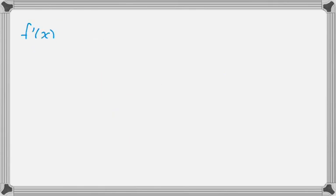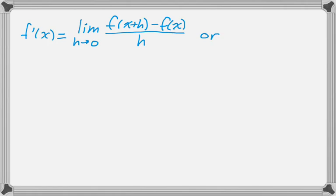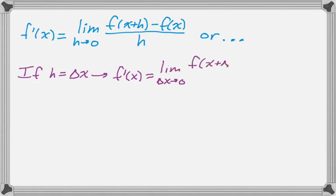So there's two different ways that you'll see it. Well, there's actually kind of three. The first one is f prime of x equals limit as h approaches 0 of f of x plus h minus f of x over h. Or you might see delta x instead of h. So f prime of x would be the limit as delta x approaches 0 of f of x plus delta x minus f of x over delta x.